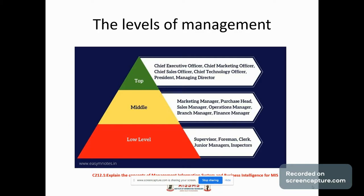The top management is the ultimate source of authority and it manages goals and policies for the enterprise. It devotes more time on planning and coordinating functions. Top management lays down the objectives and broad policies of the enterprise. It issues necessary instructions for preparation of department budgets, procedures, and schedules. It prepares strategic plans and policies for the enterprise.